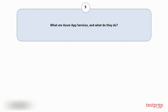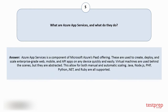Question number 5: What are Azure App Services, and what do they do? Azure App Services is a component of Microsoft Azure's PaaS offering. These are used to create, deploy, and scale enterprise-grade web, mobile, and API apps on any device quickly and easily. Virtual machines are used behind the scenes, but they are abstracted. This allows for both manual and automatic scaling. Java, Node.js, PHP, Python, .NET, and Ruby are all supported.